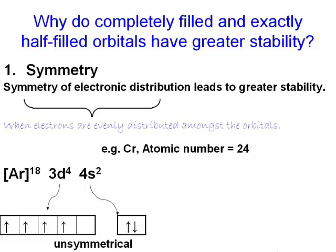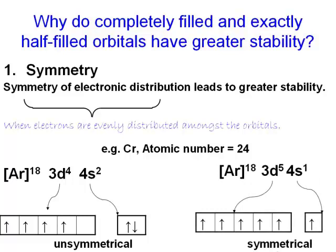If instead we took one electron from the 4s and placed it in the empty 3d orbital, then the electrons would be distributed more evenly amongst the valence orbitals. So a symmetrical distribution is proposed to make the atom more stable as compared to an unsymmetrical distribution. The same rationale can be applied to explain the actual electronic configurations of copper and molybdenum.